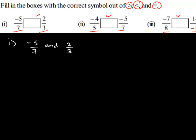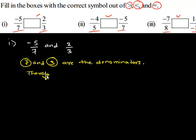Here we have 7 and 3 as the denominators. As you can see, both 7 and 3 are positive denominators. Therefore, the denominators are positive.